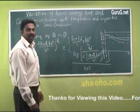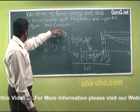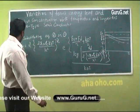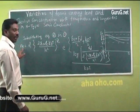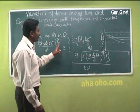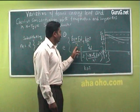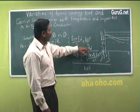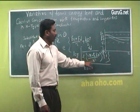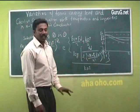To obtain the expression for carrier concentration in the case of the donor energy level, substituting equation 6 in equation 1, the density of electrons is equal to 2 × (2π m*_e k_B T / h²)^(3/2) × exp[(E_c + E_d)/2 + (k_B T / 2) × log(N_d / 2 × (2π m*_e k_B T / h²)^(3/2)) − E_c] / k_B T.